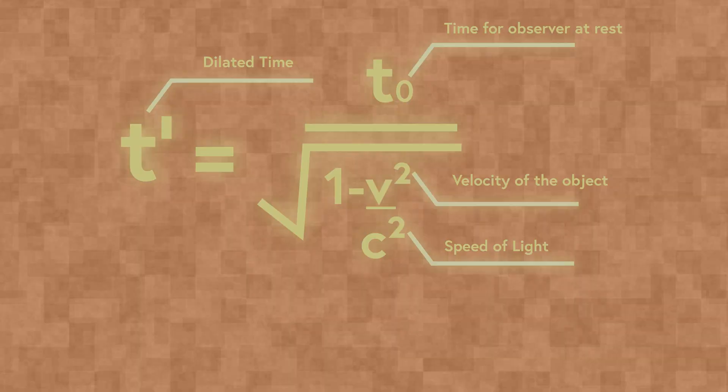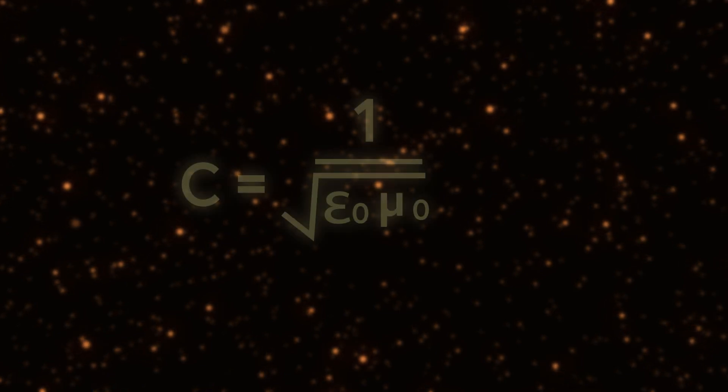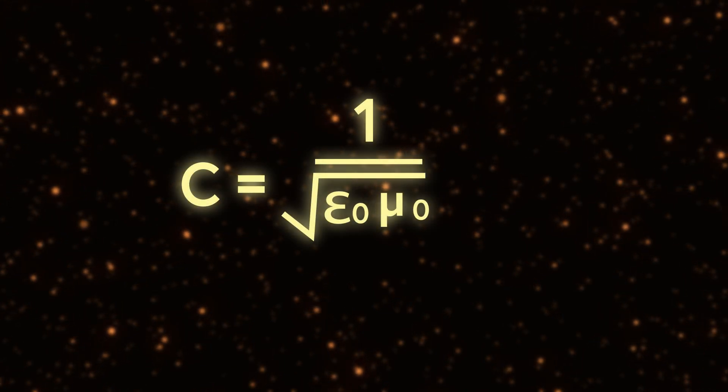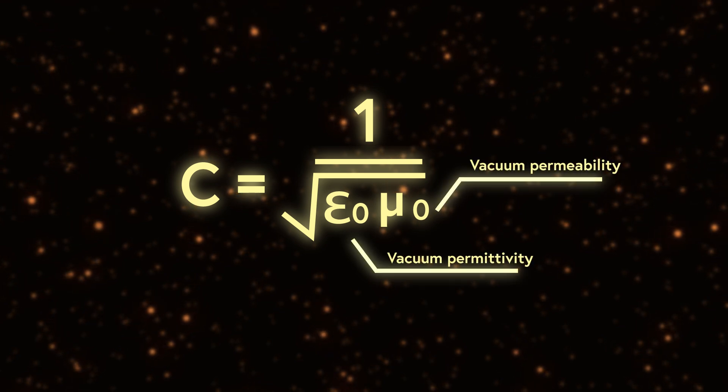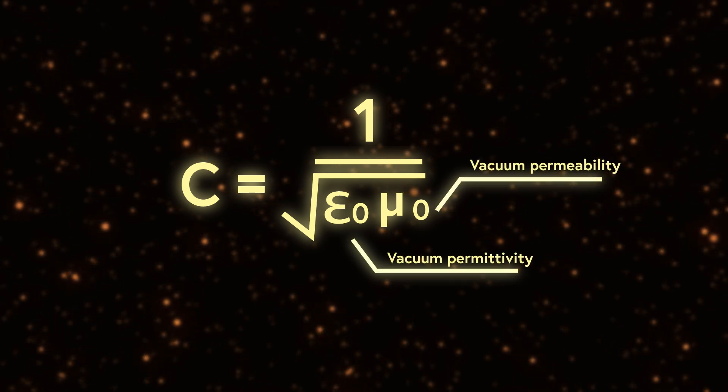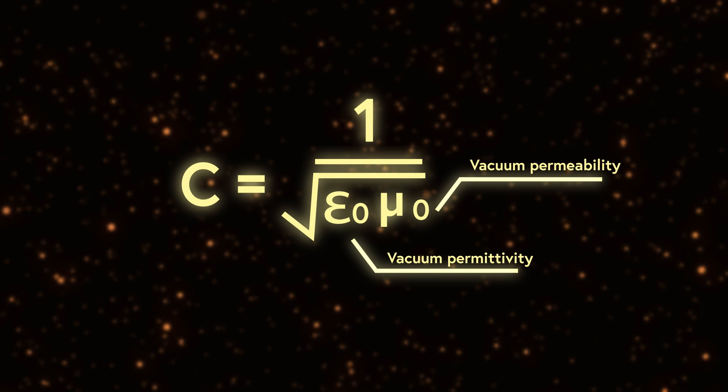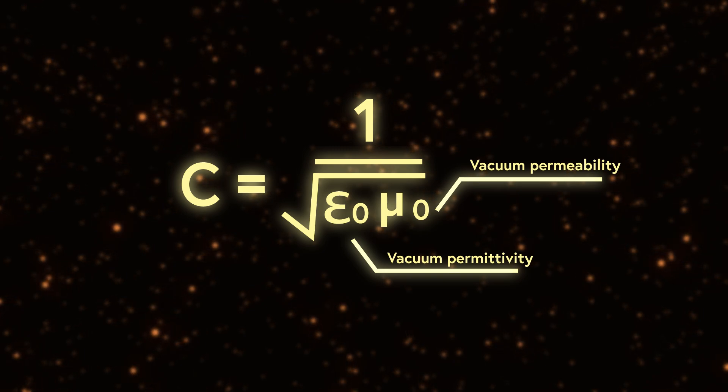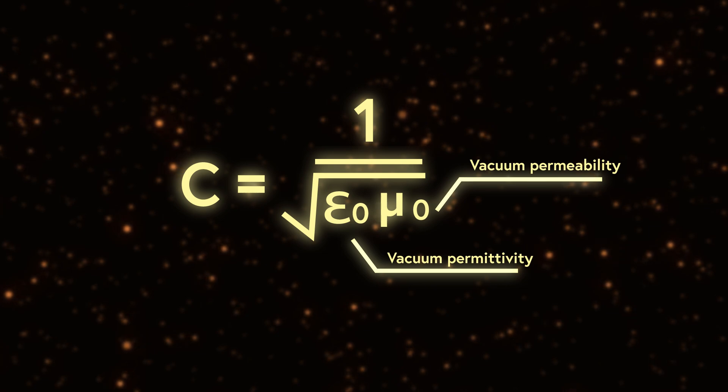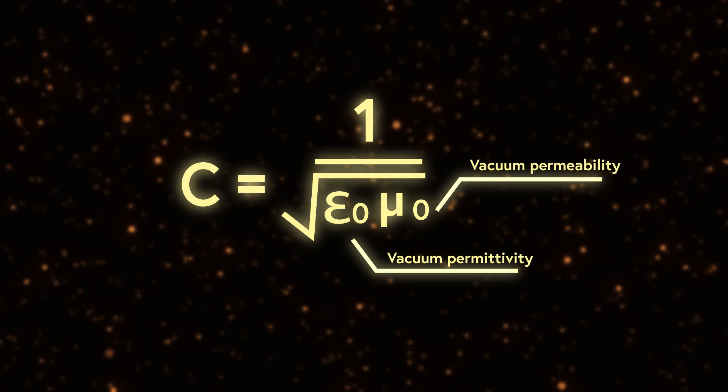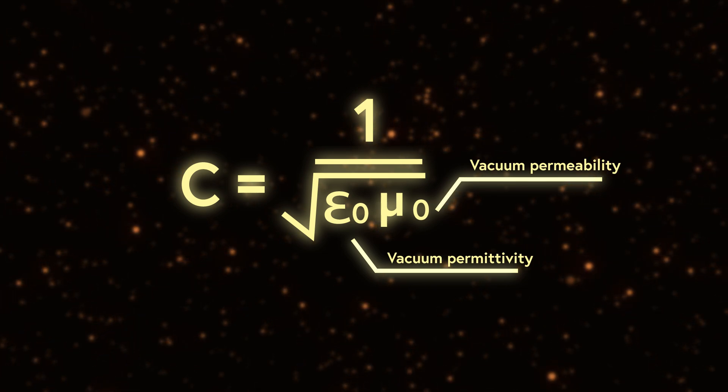The speed of light is not an isolated number. It is fundamentally linked to the properties of space through this relationship, where vacuum permeability determines how electric fields propagate and vacuum permeability governs how magnetic fields behave. If the speed of light were different, at least one of these constants would have to change, fundamentally altering how electromagnetic forces work.